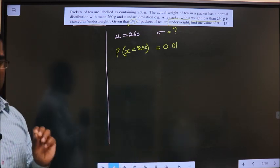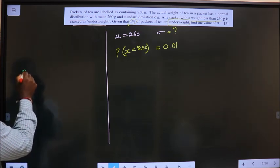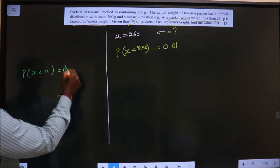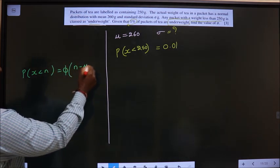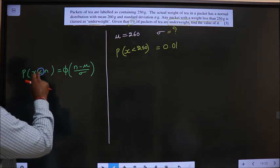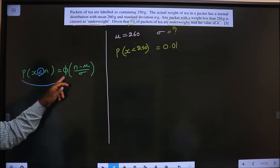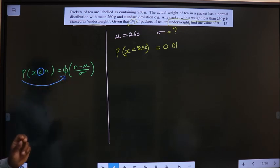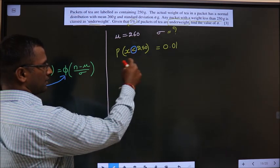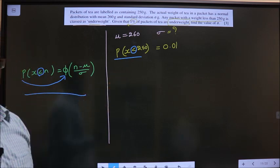In normal distribution portion, we make use of this one: P of x less than n is nothing but φ of (n minus mean) by standard deviation. Here the symbol should be less than always, then only this gets converted to φ. Here also the symbol is less than, so directly apply this onto this one.